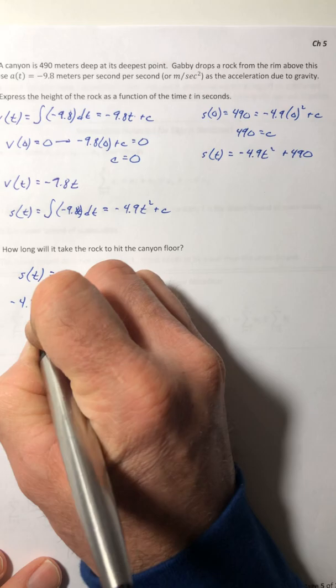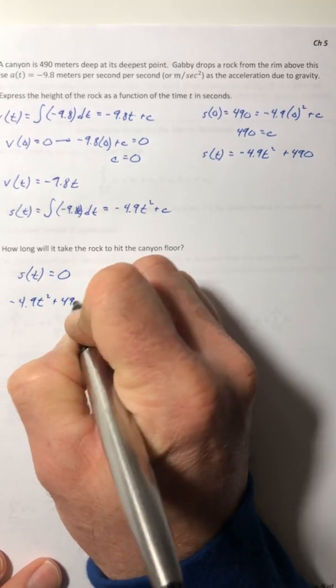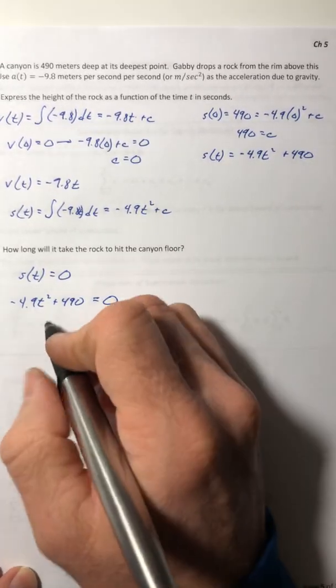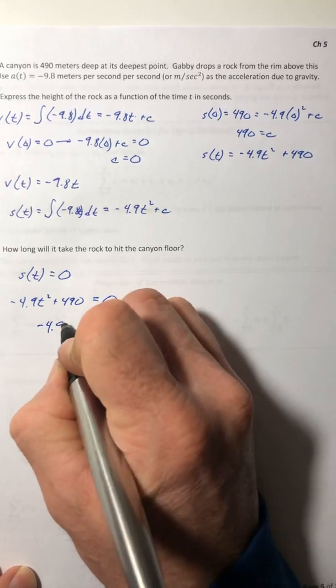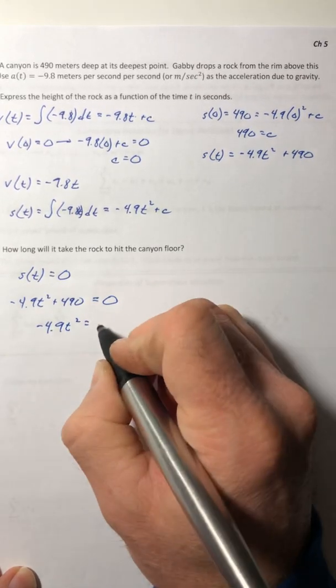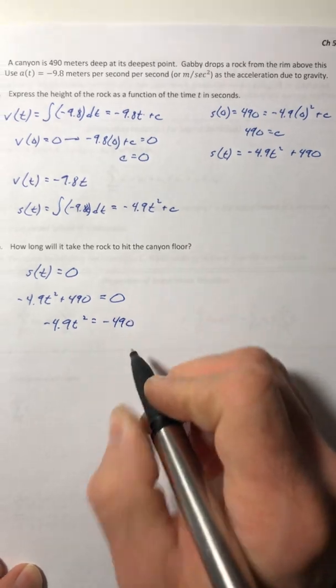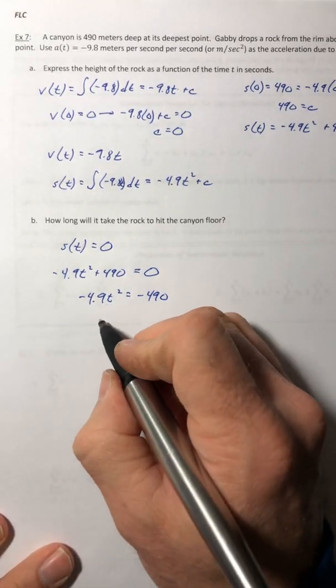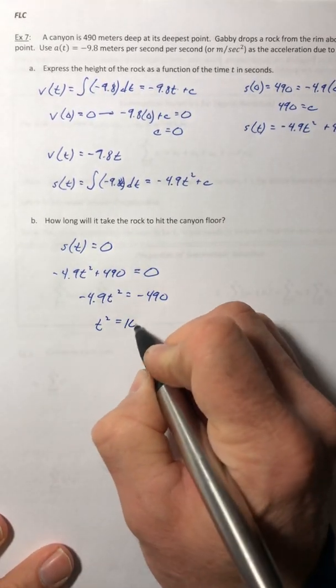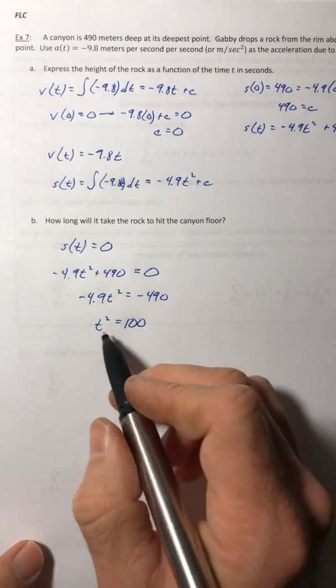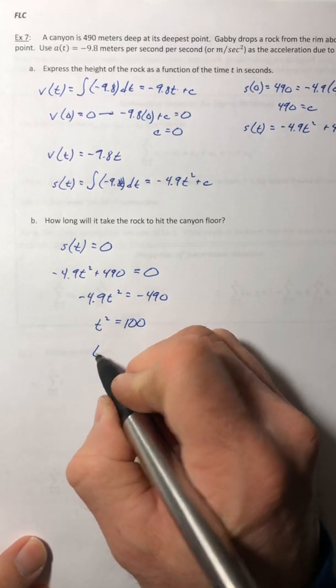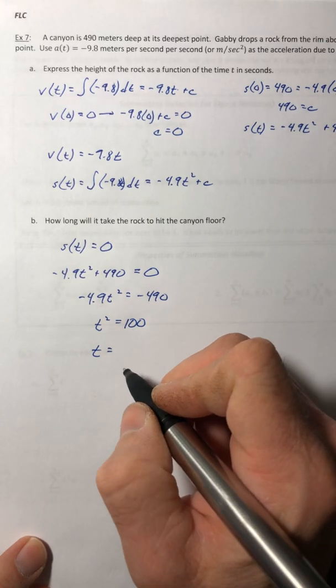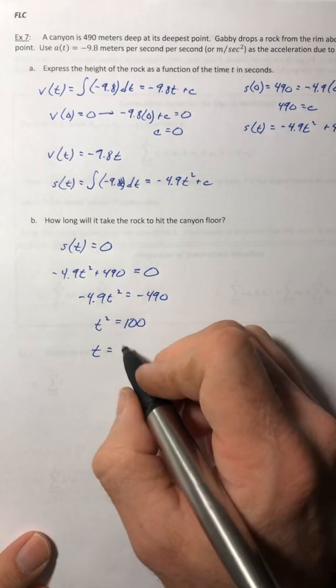So negative 4.9 T squared plus 490 is equal to 0. So move over the 490, divide by negative 4.9. T squared equals 100. Hey, that's kind of nice how that worked out. Maybe it's because I wrote the problem.